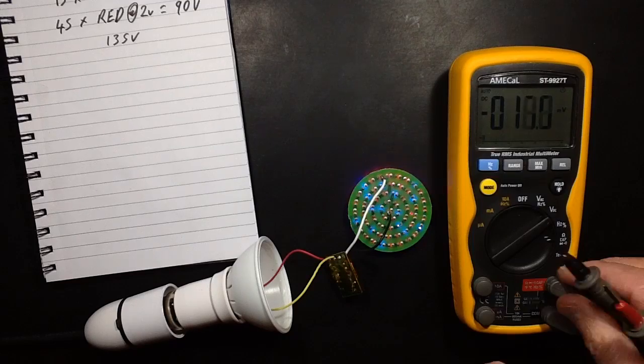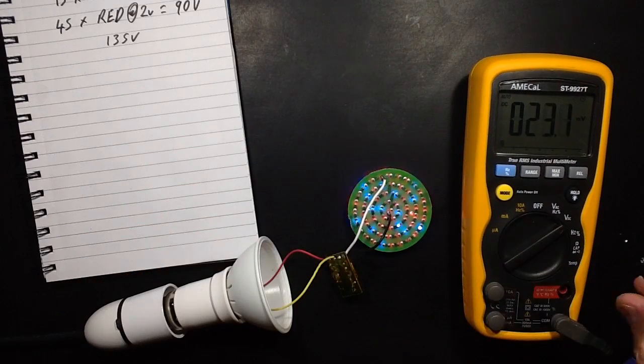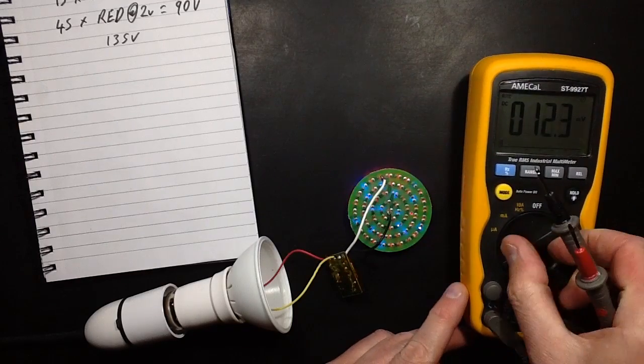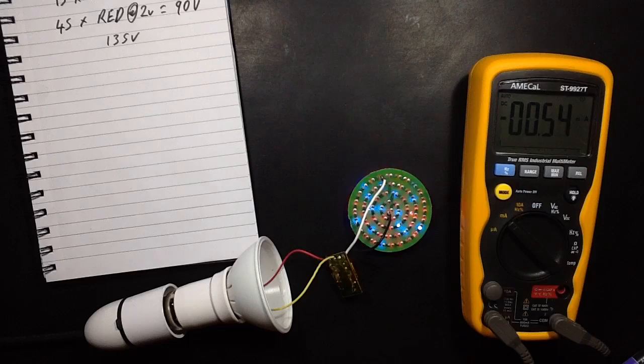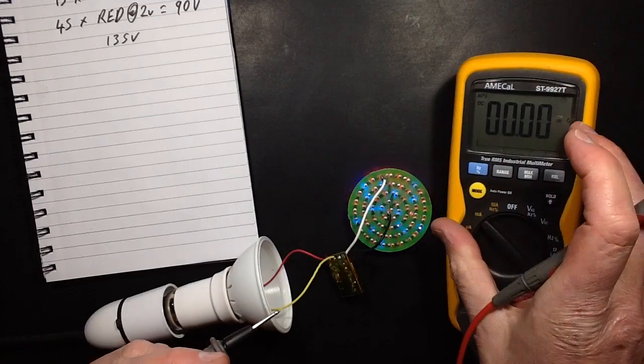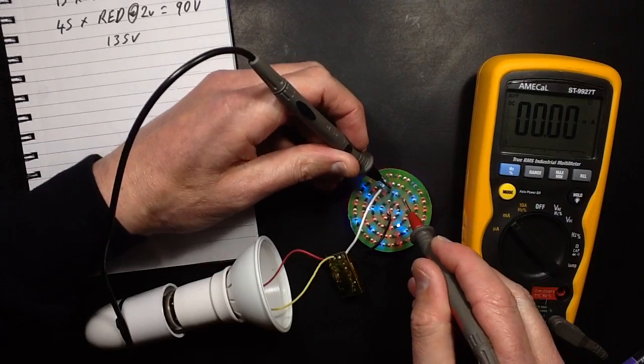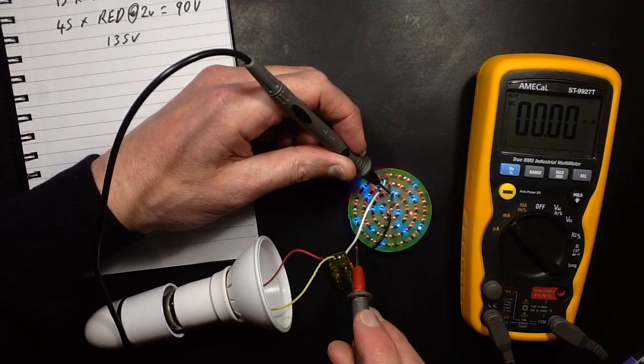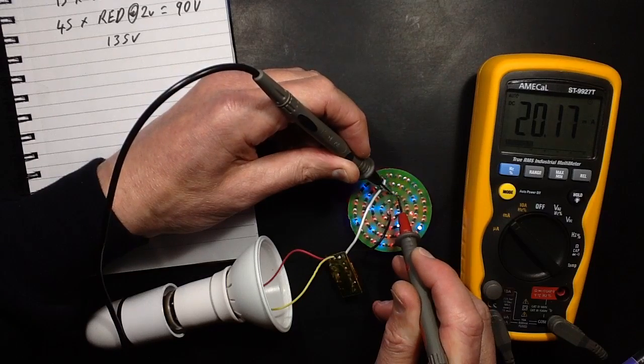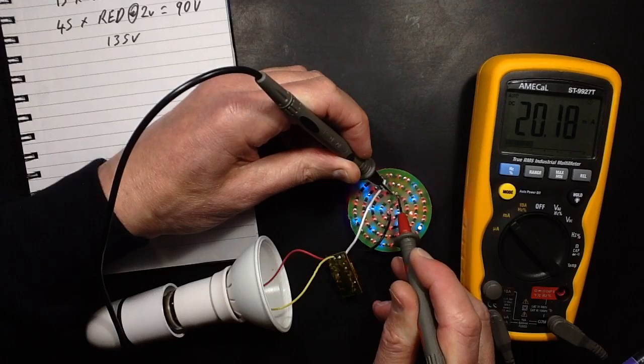Now let's measure the current going through it by actually just shorting one of the LEDs out. I'll stick this lead into the DC mA range. No, mA. It's currently on DC. So let's short an LED out, just a random LED. 20 mA almost on the button. So they're just driving these LEDs as they should be.